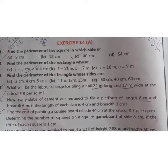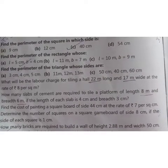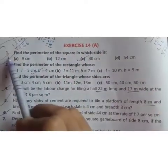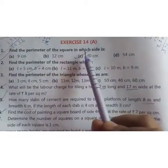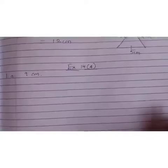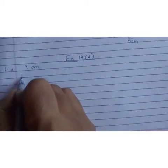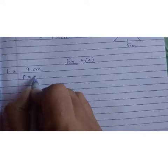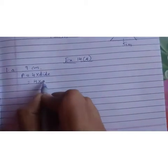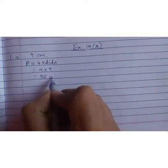Children, we know the formulas to find the perimeter as well as area of a square, rectangle, perimeter of a triangle, isn't it? Now, let us start with exercise 14A. First one, find the perimeter of a square in which side is 9 cm. So let us solve this. The formula is perimeter equals 4 into side. So 4 into 9. 9 fours are 36, and write the unit as centimeters.